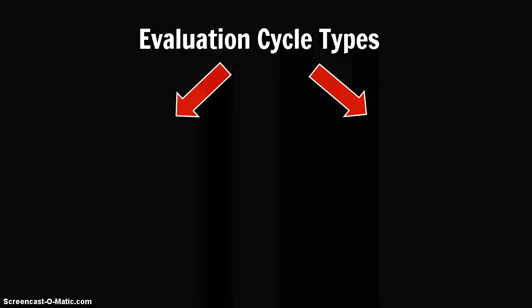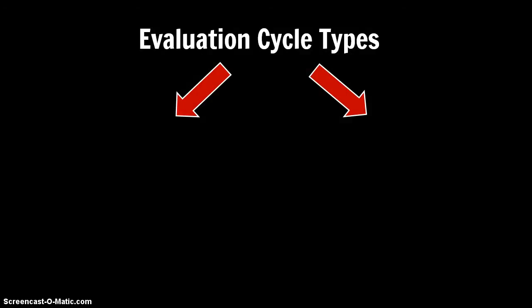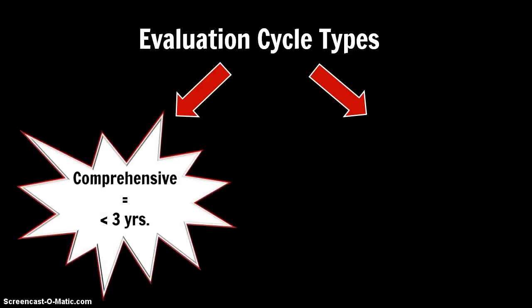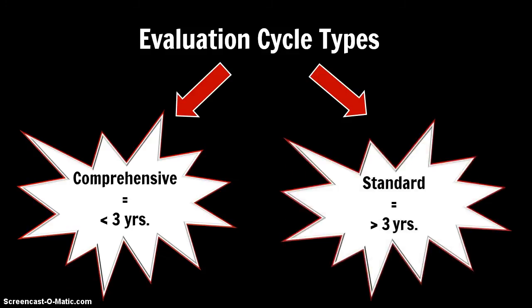A change in the evaluation instrument that we need to be aware of is that there is no longer probationary and career status. Instead, the two types of evaluation cycles are comprehensive and standard. School Library Media Coordinators with less than three consecutive years of employment are on the comprehensive cycle, and those with more than three years of employment may be evaluated on either cycle — that choice is up to the local education agency. As we go through the steps of the process, I'll point out the differences that exist depending on the cycle type.